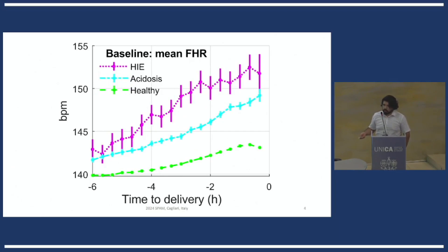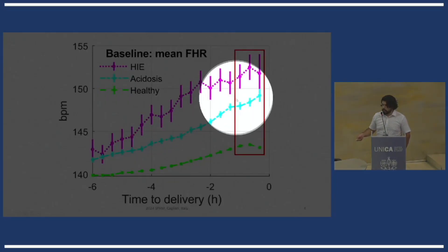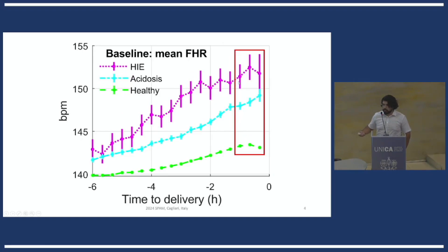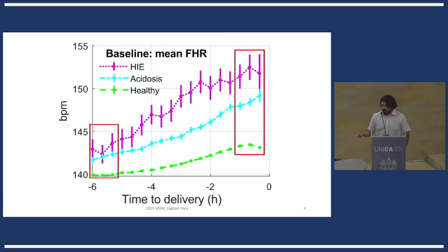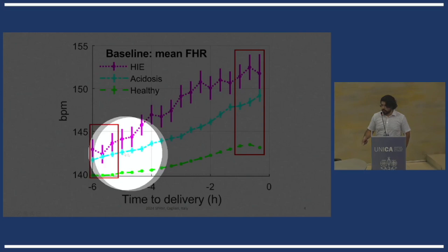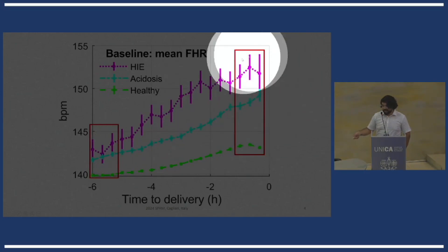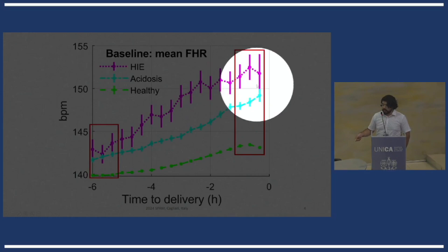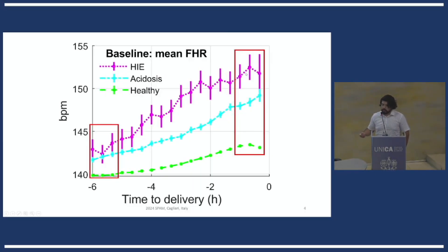Now in machine learning, what would commonly be done is to look at the last hour of labor, have an algorithm learn this distribution to then expect it to be used prospectively and tell when a fetus is progressing towards HIE or acidosis. But if we see how this distribution is changing, at the end of labor it is quite different from six hours before delivery. So only focusing on this segment of the distribution is disregarding all this evolution, and it would actually prevent the classifier from identifying early deviations from normality that might be useful to inform early interventions.